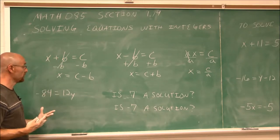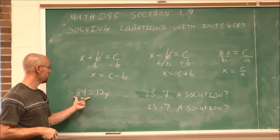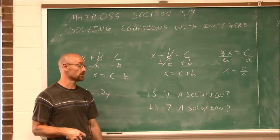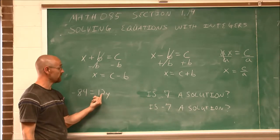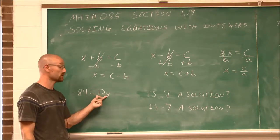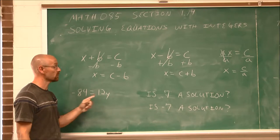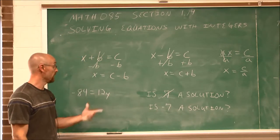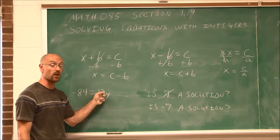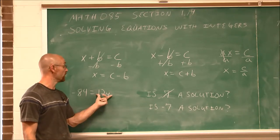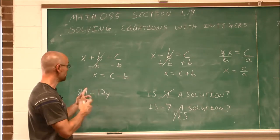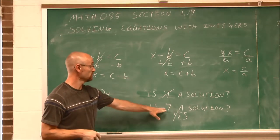Let's look at an example of the solution being either positive or negative. We have negative 84 equals 12y. Is 7 a solution, or is negative 7 a solution? If I plug in 7: positive 7 times positive 12 is positive 84, but this is negative 84 — so 7 is not a solution. But negative 7 times positive 12 — a negative times a positive is negative — gives negative 84. Negative 84 equals negative 84: yes, negative 7 is the solution.